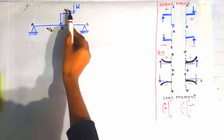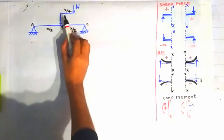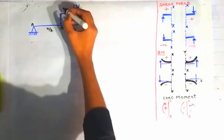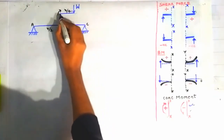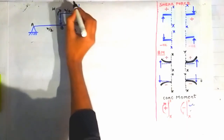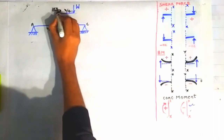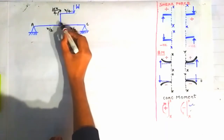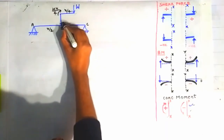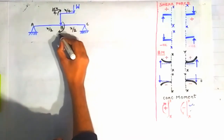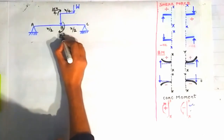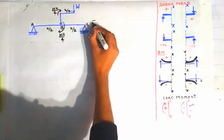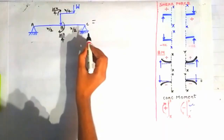First, let us see what load W is doing to this simply supported beam. This load W is acting at a distance of x/4 from this point. Because of this load W, there will be a moment in this direction at this point having magnitude W × (x/4). Because of this moment M, it can be transferred further to point B, acting in the clockwise direction with the same magnitude W×(x/4). Now we can generate an equivalent beam to make the analysis simple.